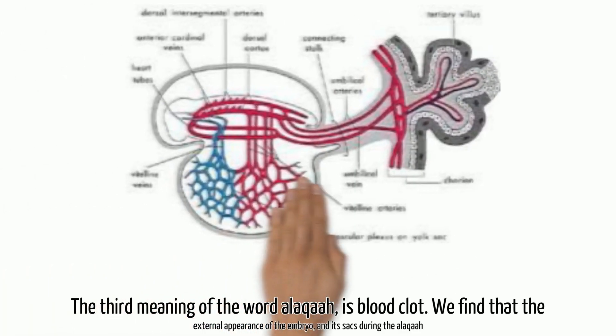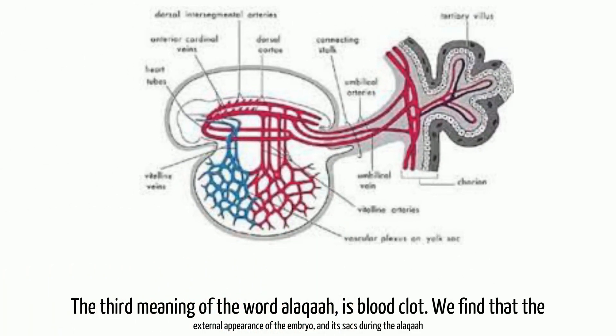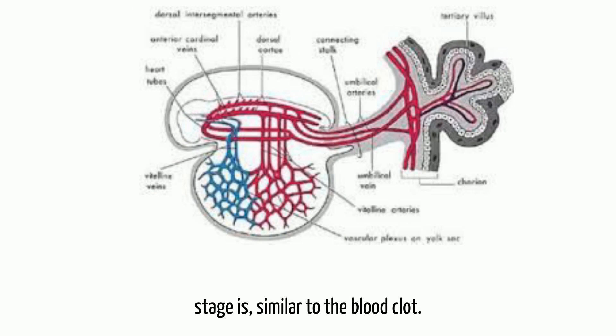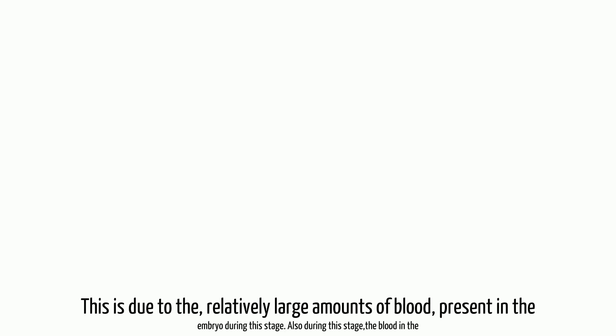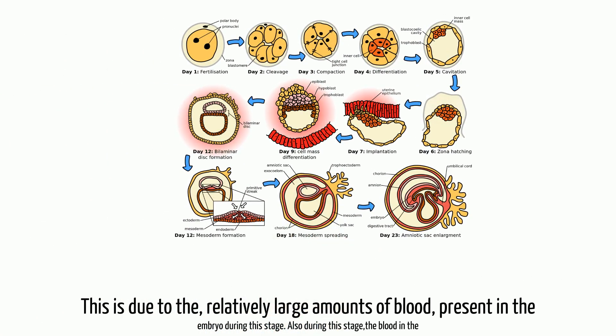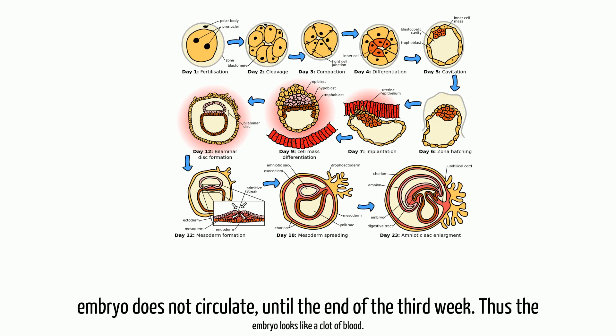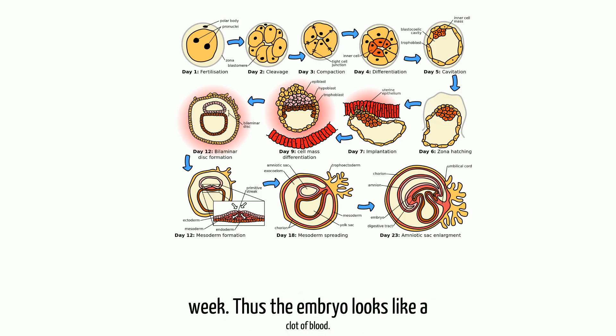The third meaning of the word alakha is blood clot. We find that the external appearance of the embryo and its sacs during the alakha stage is similar to the blood clot. This is due to the relatively large amounts of blood present in the embryo during this stage. Also during this stage, the blood in the embryo does not circulate until the end of the third week. Thus the embryo looks like a clot of blood.